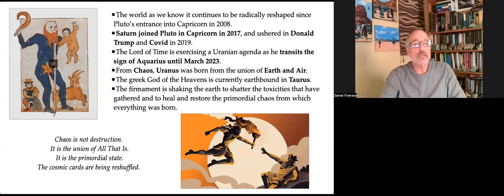The world as we know it continues to be radically reshaped since Pluto's entrance into Capricorn in 2008. Saturn joined Pluto in Capricorn in 2017 and ushered in Donald Trump and COVID in 2019. The Lord of Time is currently exercising a Uranian agenda as he transits the sign of Aquarius until March 2023. From chaos, Uranus was born from the union of earth and air. The Greek god of the heavens is currently earthbound in Taurus.